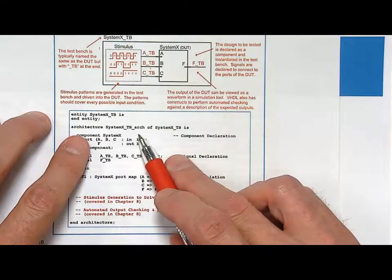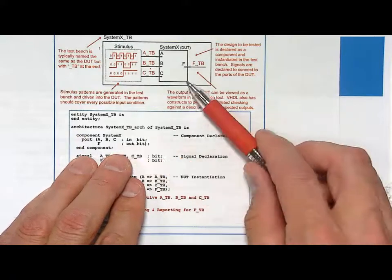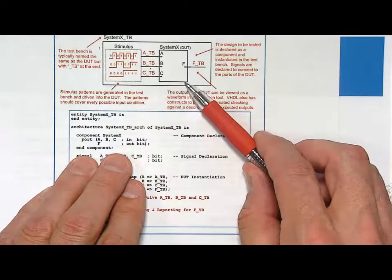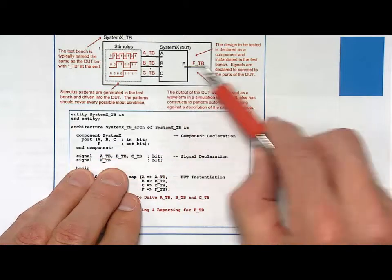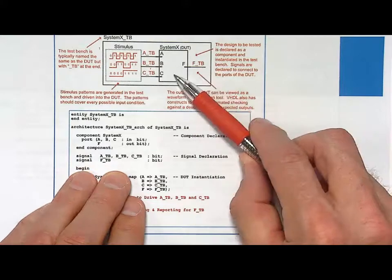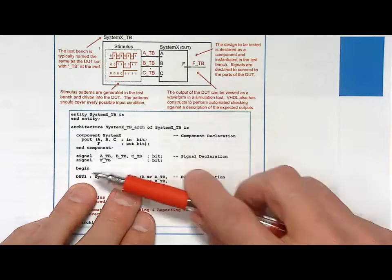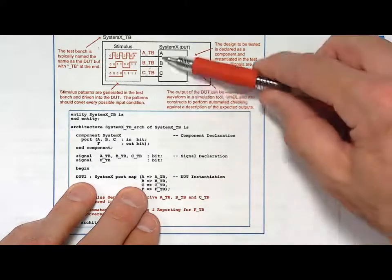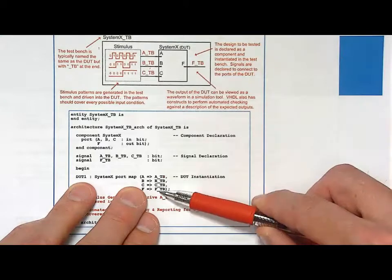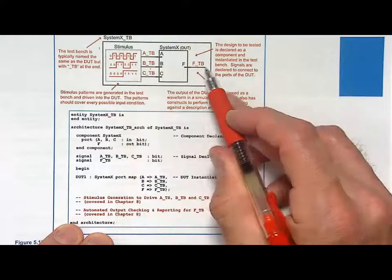When you look at what the test bench functionality is, we can recognize the component. So, we instantiated the DUT and, or we declared that we're going to use the DUT. And we actually had to create some internal signals to wire up to the DUT. And then we begin, we instantiate the DUT. So, I actually called it, I gave it its instance name DUT1. And then I port mapped it and I connected the ports of the DUT to my internal signals. And then what I do is put some functionality here that generates these. And I'm going to use a waveform viewer to view that.